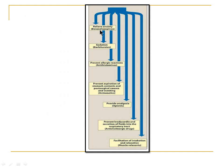Drugs like benzodiazepines are used to relieve anxiety. Barbiturate-group drugs are used to induce sedation. Antihistamine-group drugs are used to prevent allergic reactions. Anti-emetic drugs are used to prevent aspiration of stomach contents and nausea and vomiting. Anticholinergic agents are used to prevent bradycardia and secretions into the respiratory tract. Muscle relaxants are used to facilitate intubation and relaxation of muscles — these are the different drug groups used to produce balanced anaesthesia.